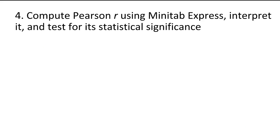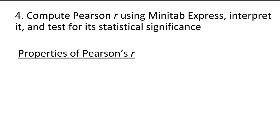Our fourth learning objective is to compute Pearson's R using Minitab Express, interpret it, and test for its statistical significance. We'll review the interpretation of Pearson's R first, then go to Minitab Express to show you how to compute it. We have five properties of Pearson's R to review.